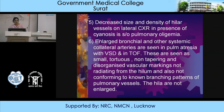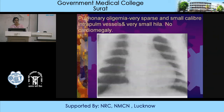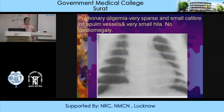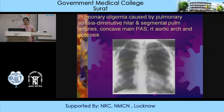This is a case of pulmonary oligemia — it appears as if there is an over-penetrated film because the blackness of the lungs is very prominent due to decreased vasculature. Another case of pulmonary oligemia caused by pulmonary atresia shows diminutive hilar and segmental pulmonary arteries, a concave main pulmonary arterial segment, a right aortic arch, and scoliosis.